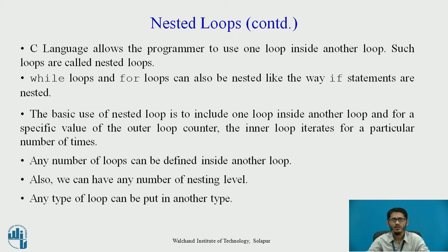C language allows the programmer to use one loop inside another loop — such loops are called nested loops. While loops and for loops can also be nested, just like how if statements are nested. The same way we can have nested while loops, nested for loops, and so on.